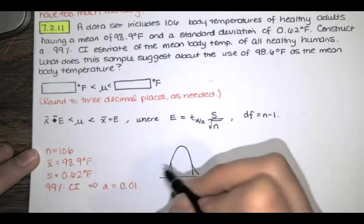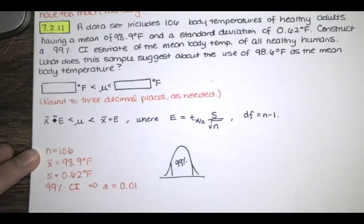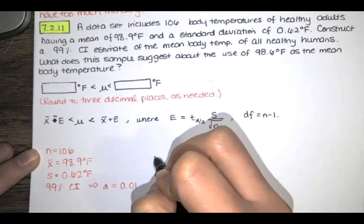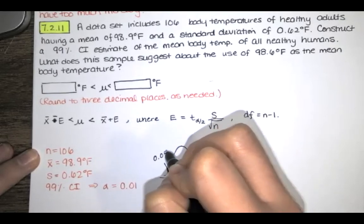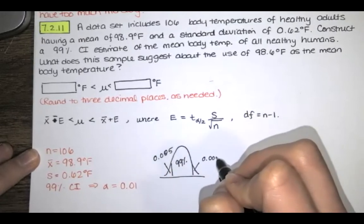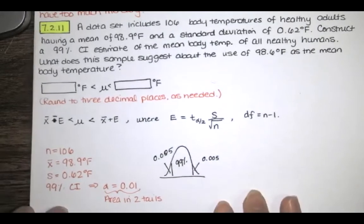When we look at our student T distribution for this particular sample size, if I want a 99% confidence interval, that means I want 99% of the area here, and I want the area in two tails to be 1%, or half of 1% in each tail. So when α equals 0.01, that is the area in two tails that I'll need when looking up my critical T value.